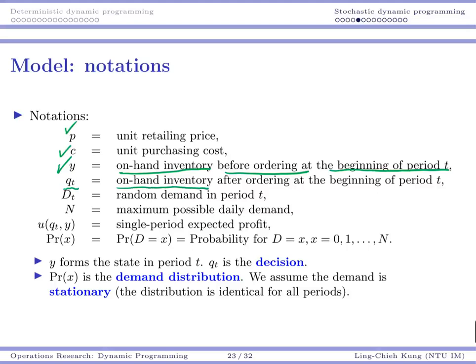Then we have qt. What is qt? That's the on-hand inventory after ordering at the beginning of period t. You need to be careful about the two notations y and qt. Basically, y is your state. It's something that you observe before you make your decision. Once you make your decision, you get to qt. That's the amount you have after you make the decision.